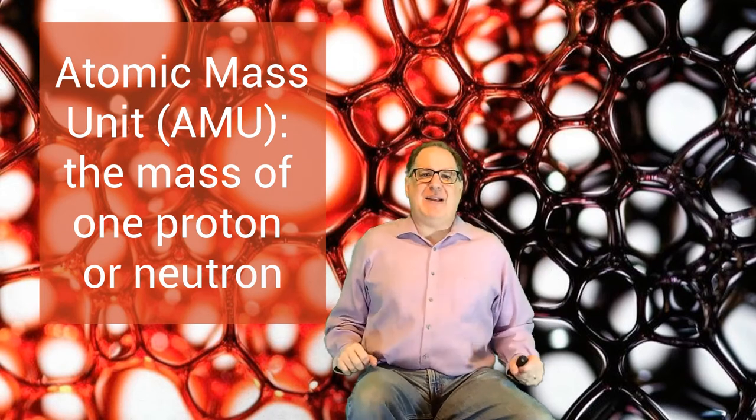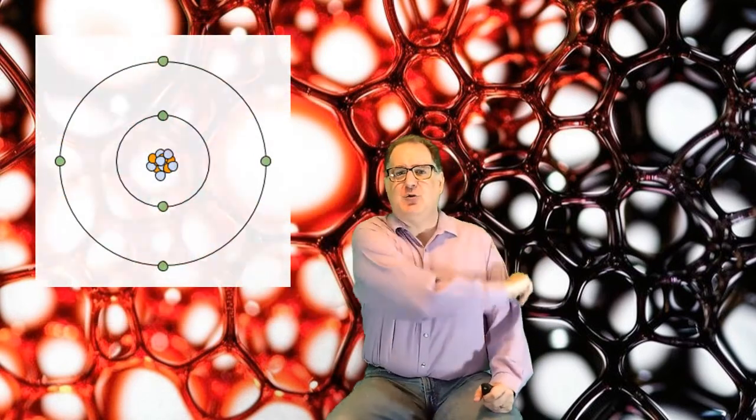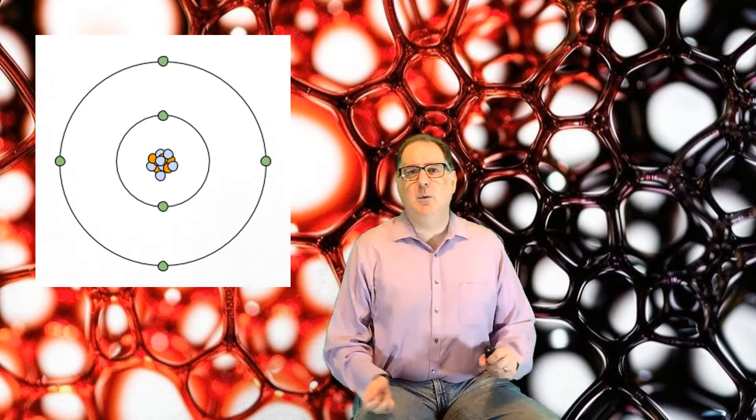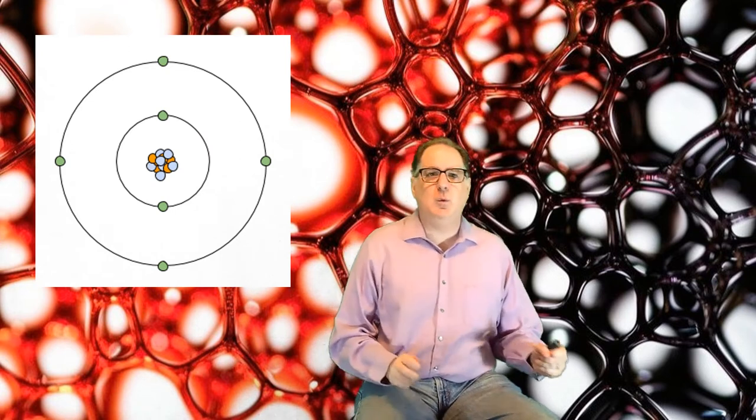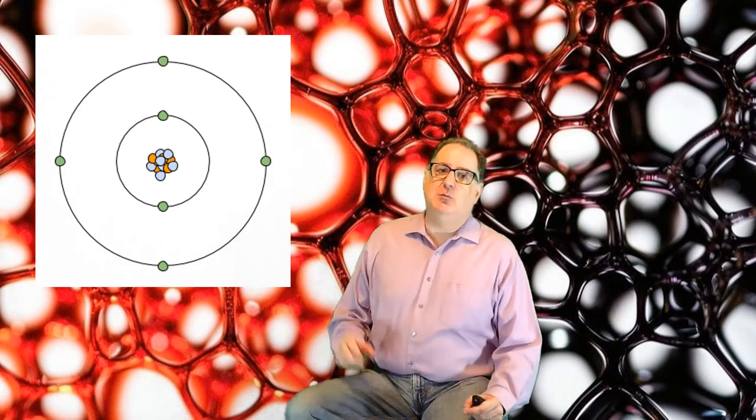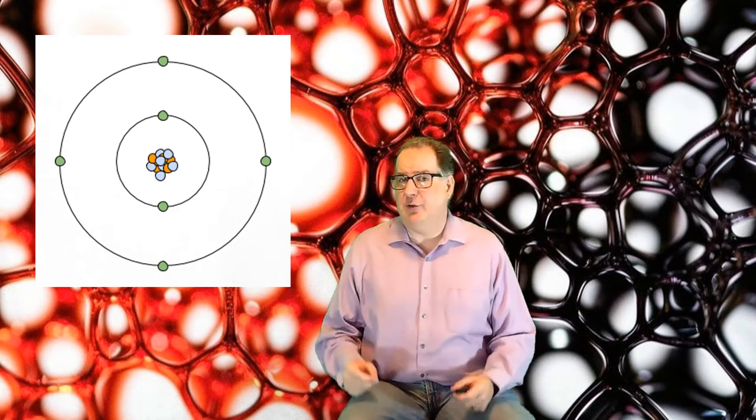Quick question! What's the mass of a carbon atom with seven neutrons? 13 AMU, six protons plus seven neutrons.